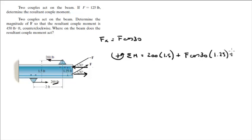This is equal to whatever the sum of the moments is equal to. So on the first one, they're giving you f and they're telling you find the resultant moment.